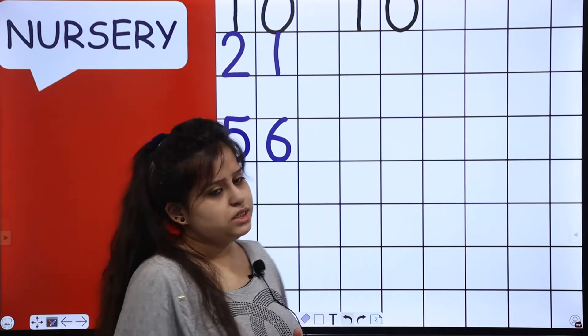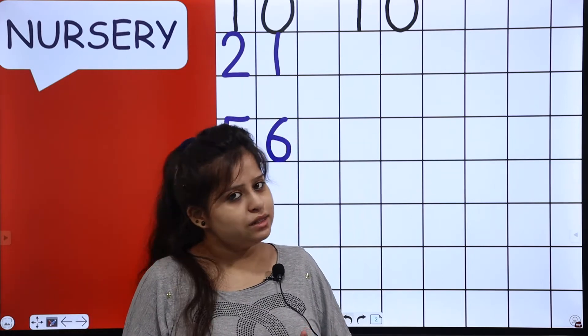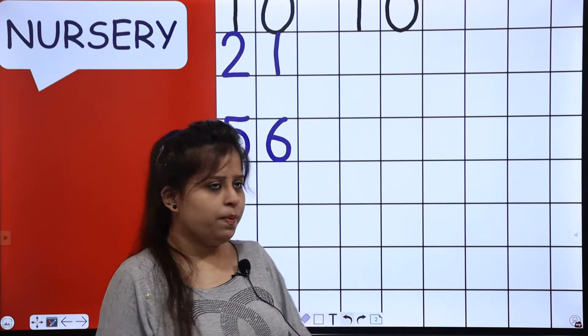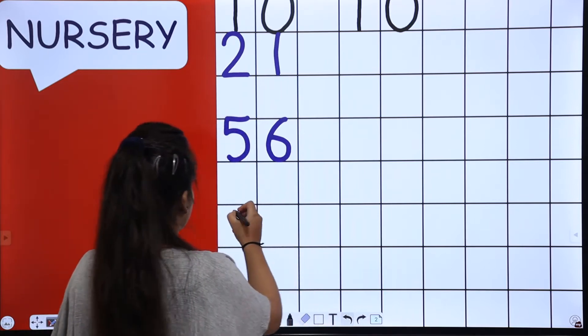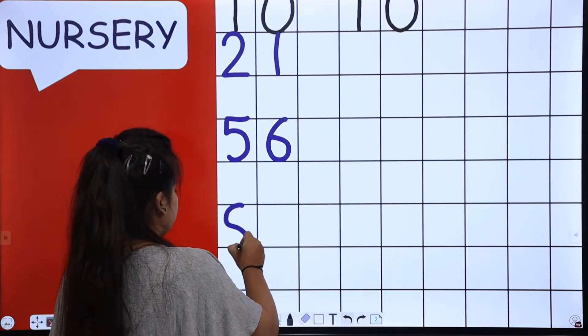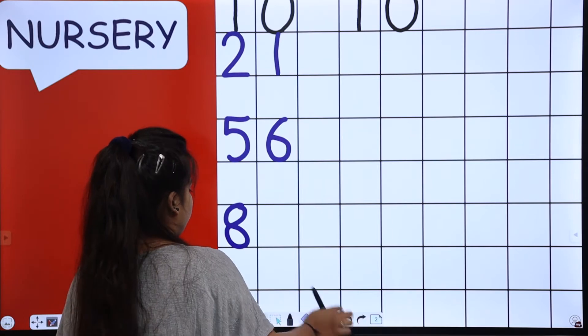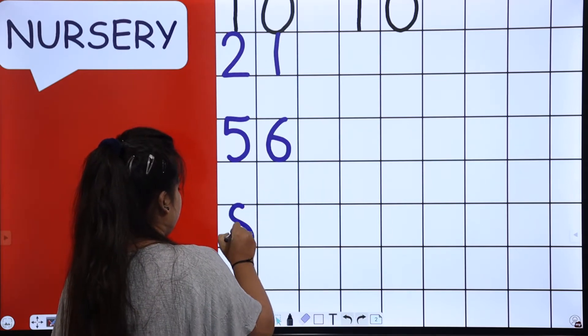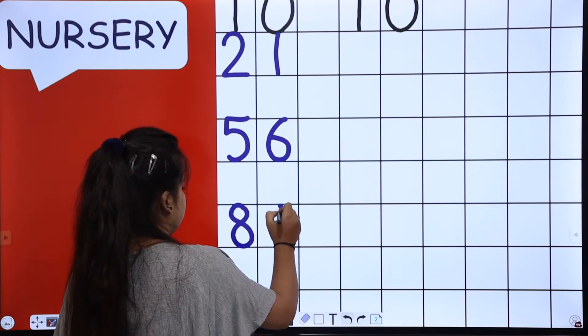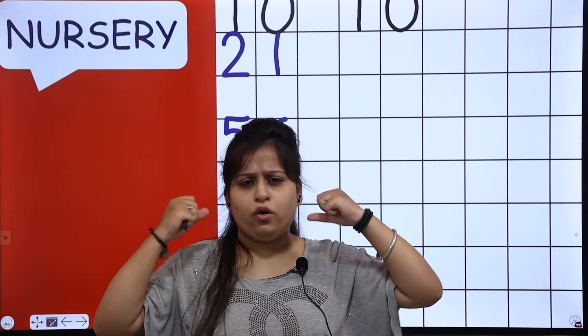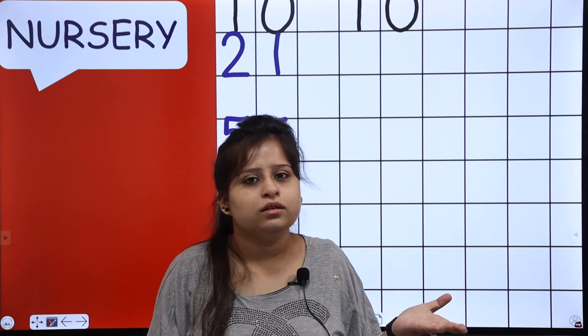First you will write and then I will write. 8, 9 — eighty-nine. Interesting dictation! Why are you doing this? Because your number identification needs to be stronger. You have to know what comes after 8.